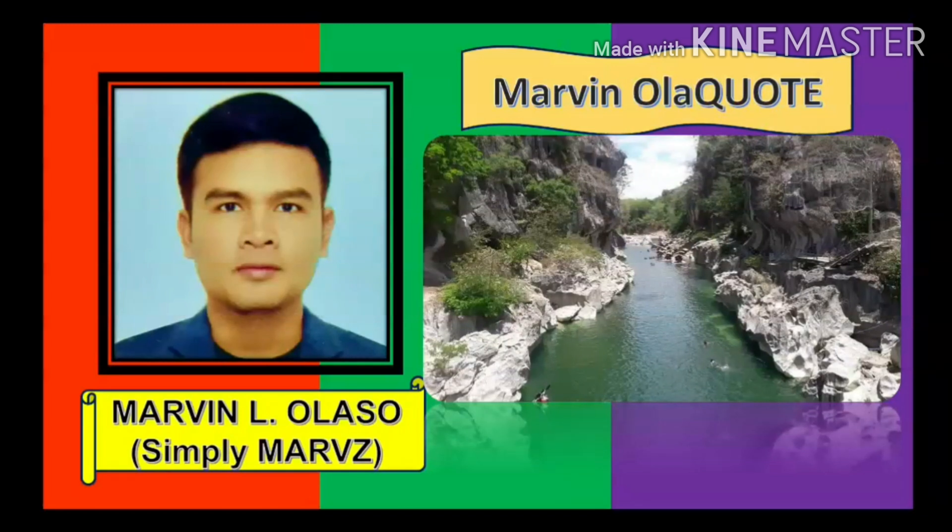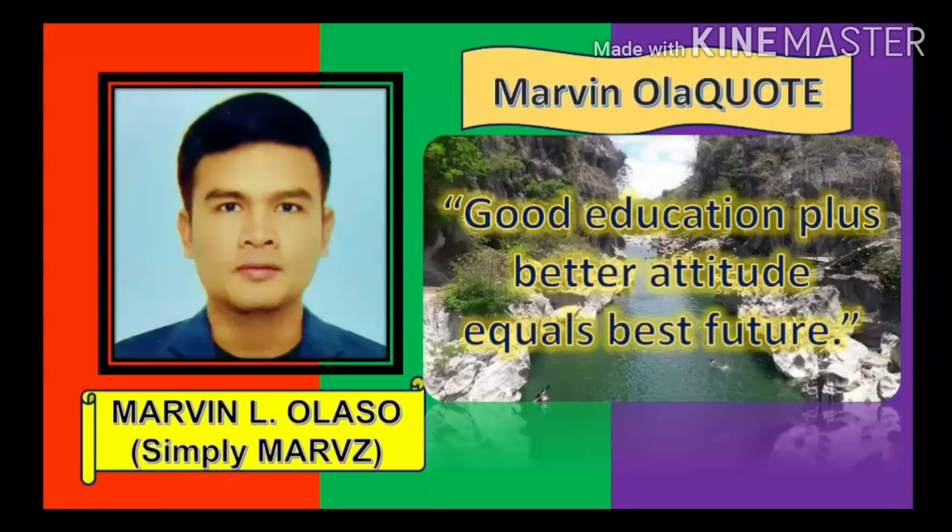I often share this to my viewers and cite my experience as living proof to this philosophy. Since I am teaching math, I created a formula just for this: Good education plus better attitude equals best future. Good education really is our weapon in life. That's why education really is a right and privilege that we need to value. Other than good education, we need to be optimistic, passionate, and perceive better attitude in dealing problems and other critical situations. If you have this foundation, I can assure you that best future will come to you.